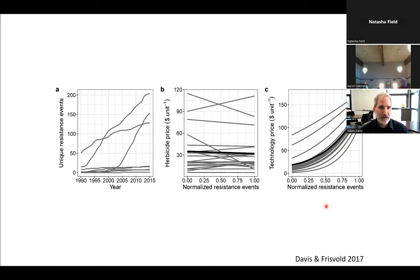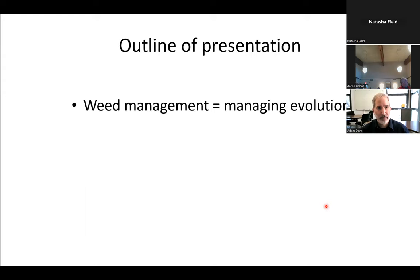The technology price that people pay has been going up with the number of normalized resistance events, even though you're losing that feature that you're paying for. So how can we design weed suppressive cropping systems that do more of the work and don't make the herbicide do all the work?